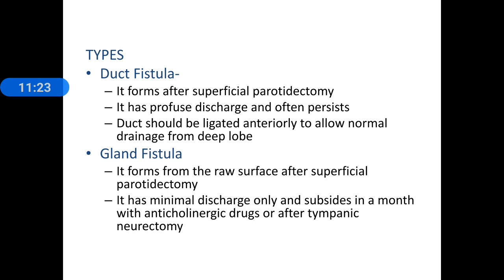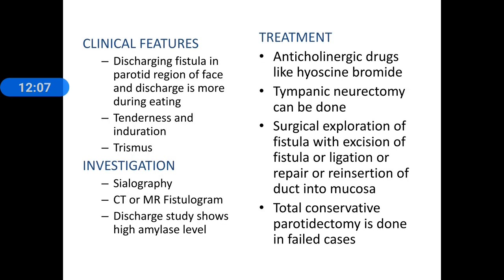There are two types: duct fistula and gland fistula. A duct fistula usually forms after superficial parotidectomy, has profuse discharge, and often persists. Treatment: the duct should be ligated anteriorly to allow normal drainage from the deep lobe, which still remains after superficial parotidectomy. A gland fistula forms on the raw surface after superficial parotidectomy, has only minimal discharge, and usually subsides within a month with anticholinergic drugs or after tympanic neurectomy — which cuts off the parasympathetic secretomotor fibers to the region.